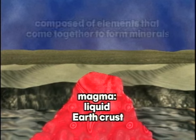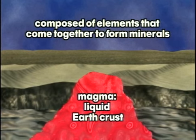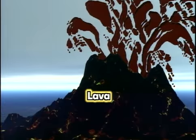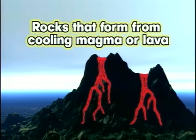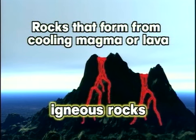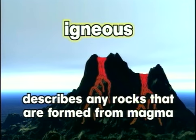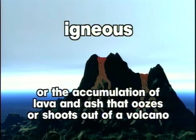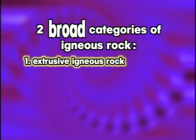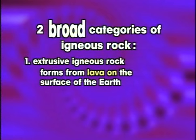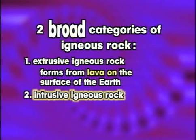Magma is liquid earth crust, composed of elements that come together to form minerals. Lava is just magma that has made it up through the earth's crust to the surface. Rocks that form from cooling magma or lava are called igneous rocks. There are two broad categories of igneous rock: extrusive igneous rock, which forms from lava on the surface of the earth, and intrusive igneous rock, which forms from magma below the surface.